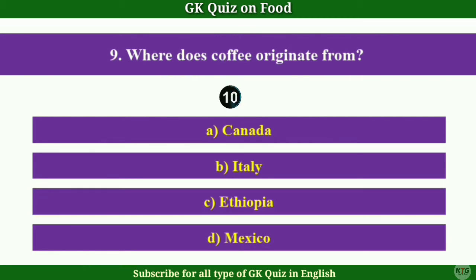Question No.9: Where does coffee originate from? Answer C: Ethiopia.